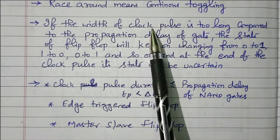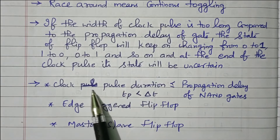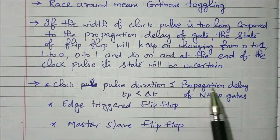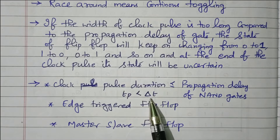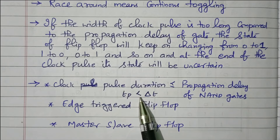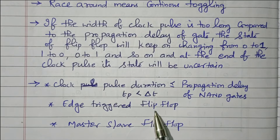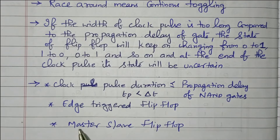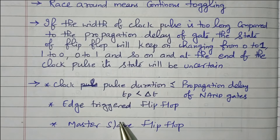When the clock pulse is more and propagation delay is less, the race around condition exists — that 0 to 1, 1 to 0 toggling. The clock pulse duration should be less than or equal to the propagation delay of the NAND gate: TP (clock pulse) should be less than DT (propagation delay of the NAND gate). This is achievable in edge-triggered flip-flops. Edge triggering means during the positive edge (0 to 1) or negative edge (1 to 0). By using a master-slave or edge-triggered flip-flop, we can avoid the race around condition.